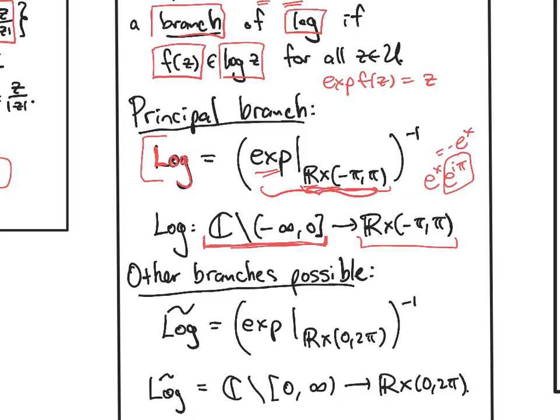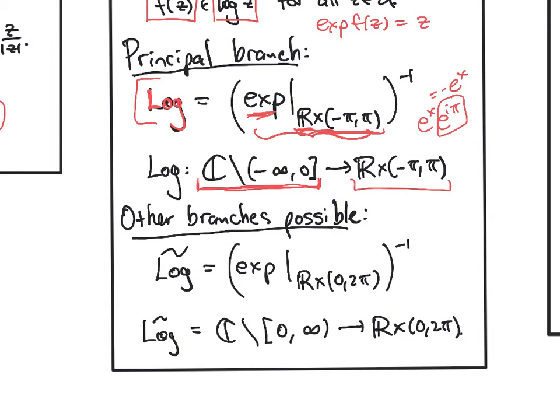This is just the principal branch. You could write down all kinds of other branches by restricting the exponential map to the real numbers cross some other interval of length 2π. So another branch that you might consider would be exp restricted to ℝ × (0, 2π) and take the inverse function.